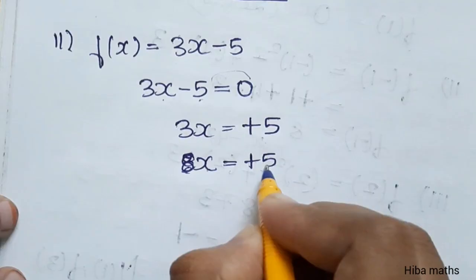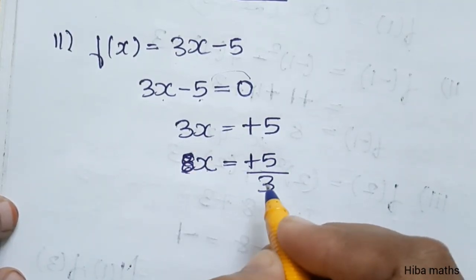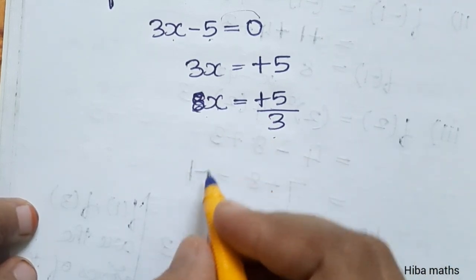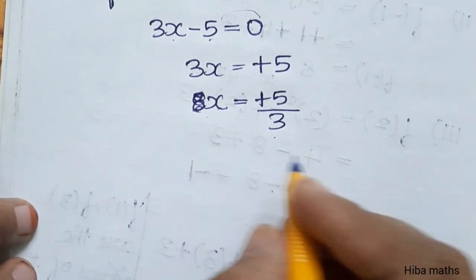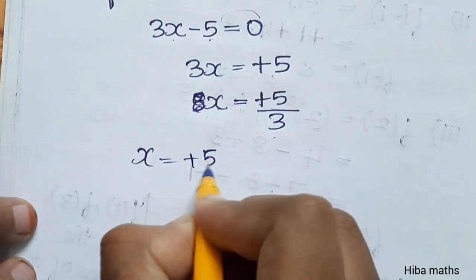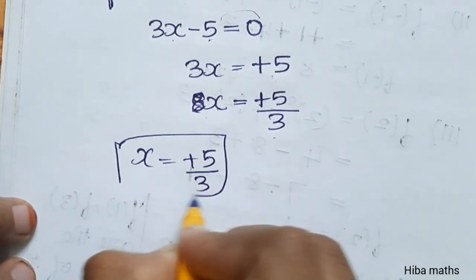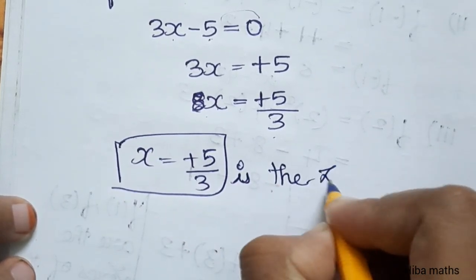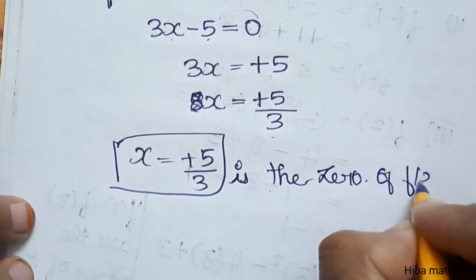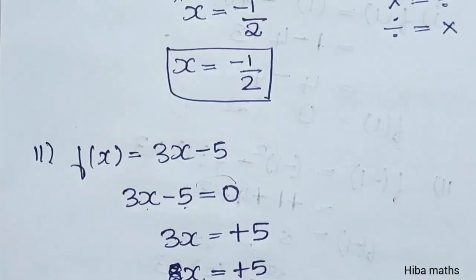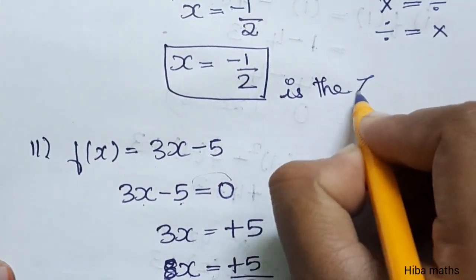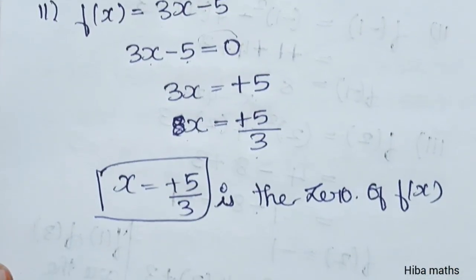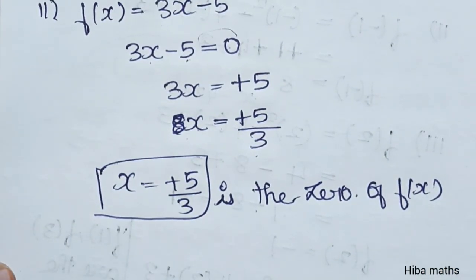x is equal to plus 5 divided by 3. So x = 5/3. If we can understand, why — the zero of f(x). The first sum limit is the zero of f(x). Understand that — it's a very easy step. Thank you so much for watching.